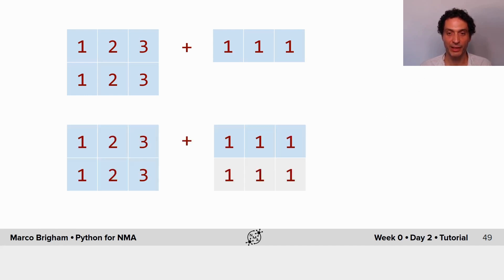And the same thing will happen in that broadcasting will add the missing row of elements here, so that now we are adding apples to apples.